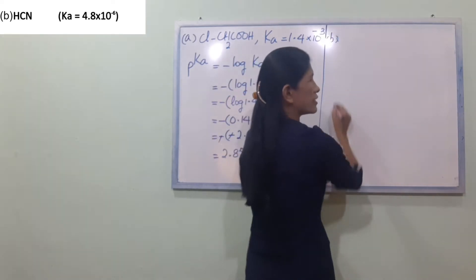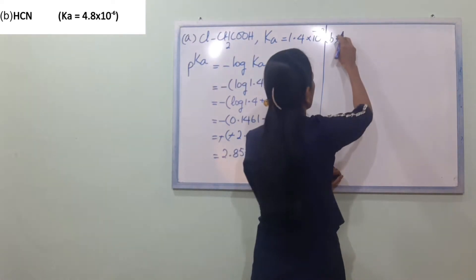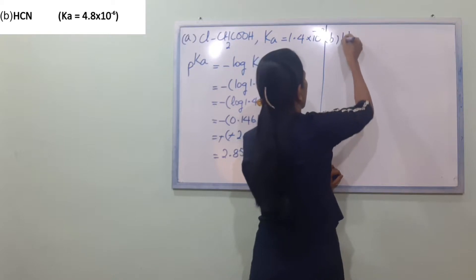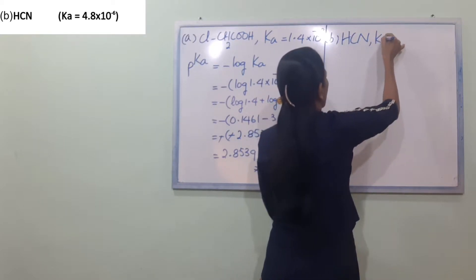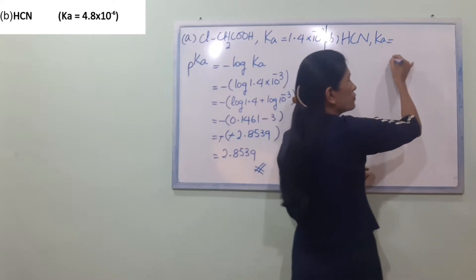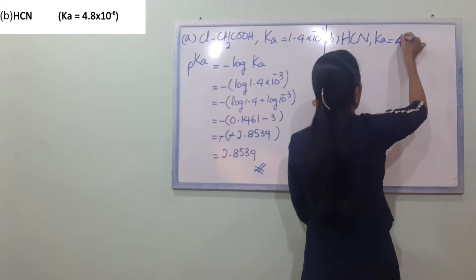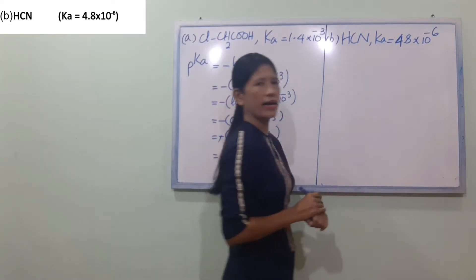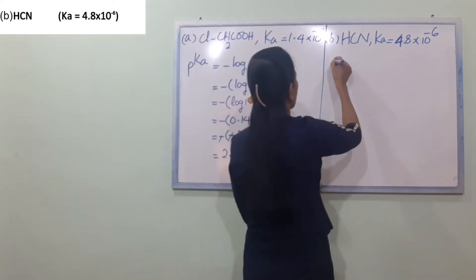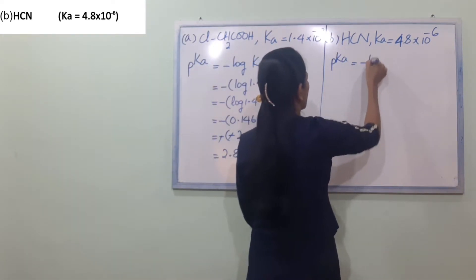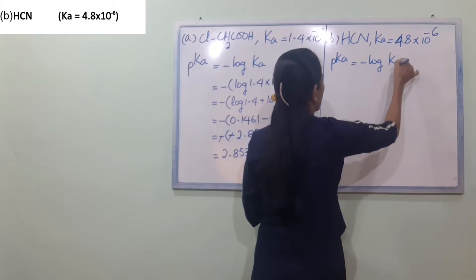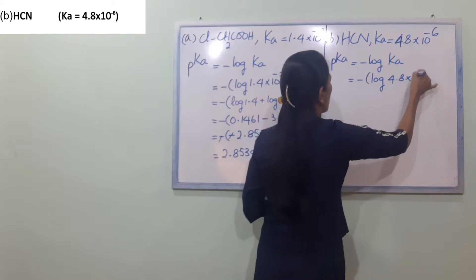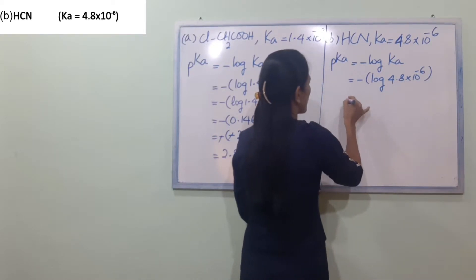This is called hydrogen cyanide, HCN. The Ka is 4.8 into 10 power minus 6. PKA is equal to minus log KA, which is minus log of 4.8 into 10 power minus 6.